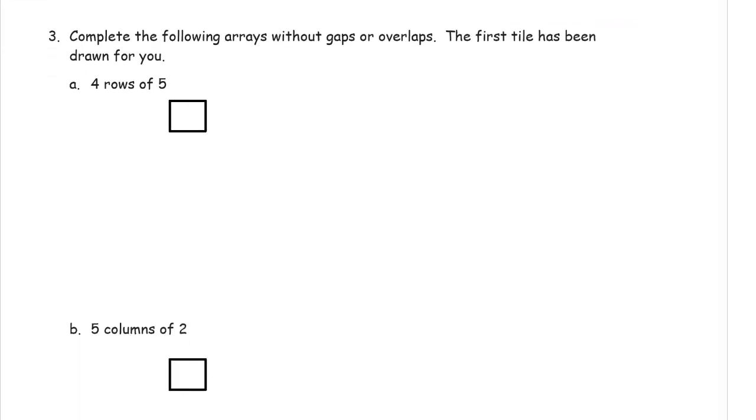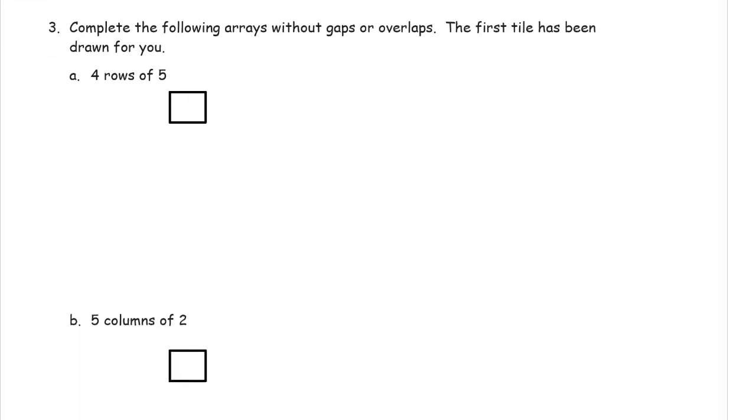Now this says complete the following arrays without gaps or overlaps. The first tile has been drawn for you. So now we're not tracing around a cutout tile anymore. We're just trying to draw squares that are the same size. It might not be perfect. It might not be pretty. Just take your time, and there's not a whole lot of them that you have to draw.